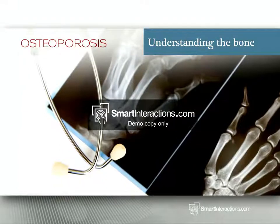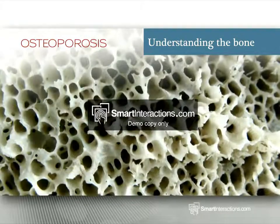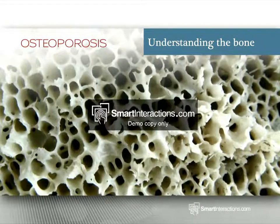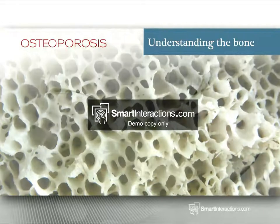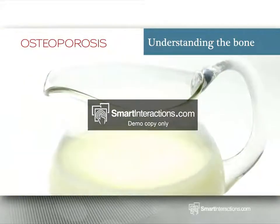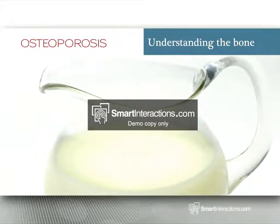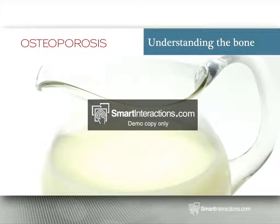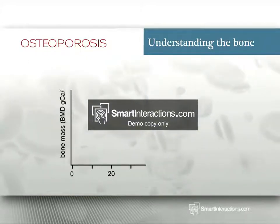Understanding the bone. Bone is a living tissue. It is made mostly of collagen, which provides a soft structure, and calcium, a mineral that strengthens and hardens this structure. More than 99% of the body's calcium is contained in the bones and teeth. Since bones are alive, they grow and are depleted throughout your life.